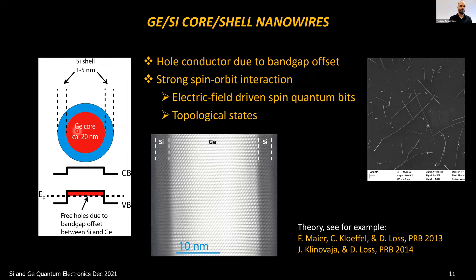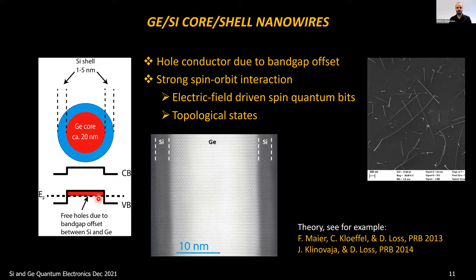We use germanium-silicon core-shell nanowires. As shown in the cartoon, there's a germanium core of about 20 nm and a silicon shell of 1 to 5 nm. Because of the different band gaps, we get a type-2 staggered band alignment, which places the Fermi energy below the top of the valence band — giving free accumulation of holes inside the nanowire without dopants, since dopants add disorder. This gives very favorable transport properties. There's also a strong spin-orbit interaction predicted in these nanowires, useful for electric-field-driven spin qubits and for creating topological states predicted by Daniel Loss and Jelena Klinovaja.